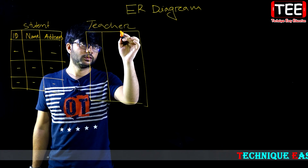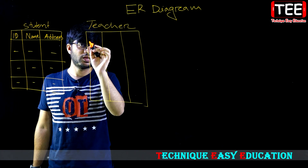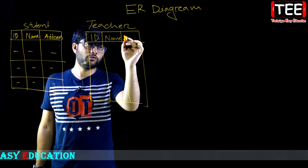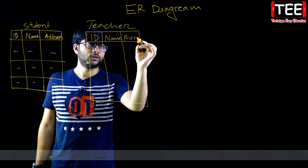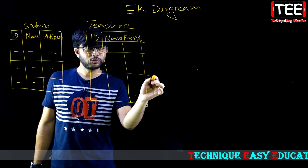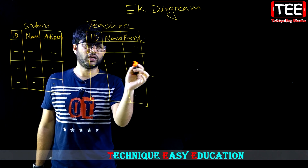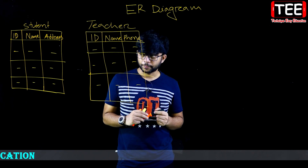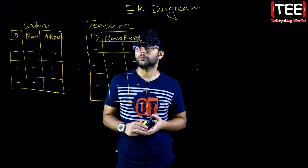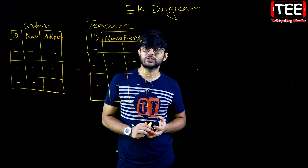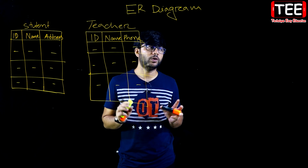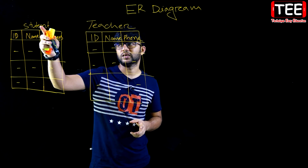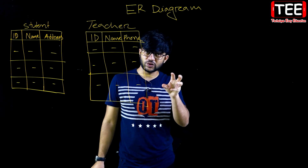Teacher ID, teacher name, teacher cell phone number — teacher ID, teacher name, teacher phone number. We are concerned about the data table; I have been told that you can have a diagram, and that is the data table. This table is an entity that has different attributes.